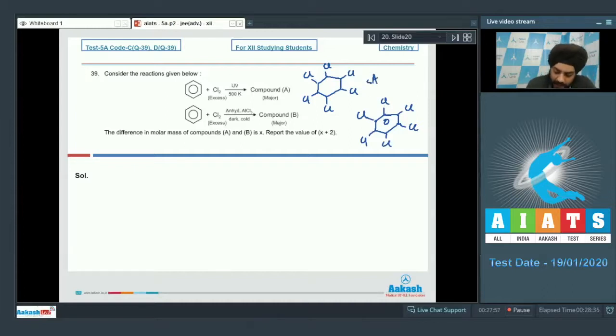These are compound A and B major which are asked in the question. The difference in molar mass of compounds A and B is x. Report the value of x plus 2. If I talk about A and B, they differ in their molecular mass by six hydrogen units. So the difference in molar mass is to be reported as 6, and we have to report the value of x plus 2, so it will come out to be 08. For question number 39, we have to mark the answer as 08.